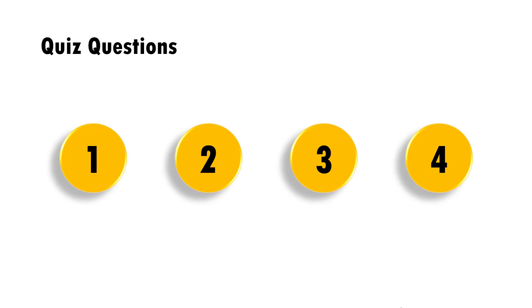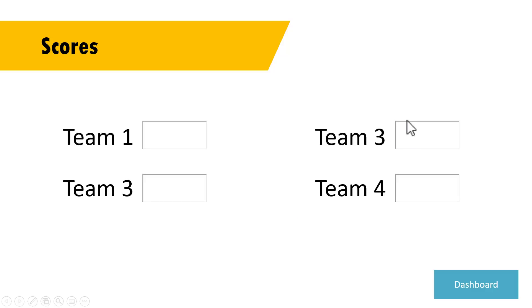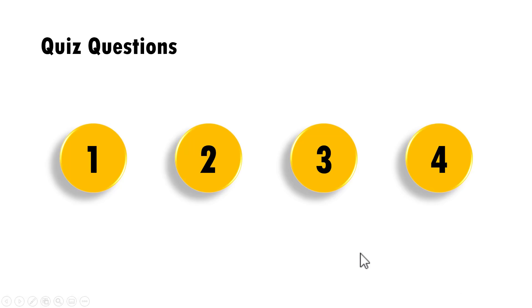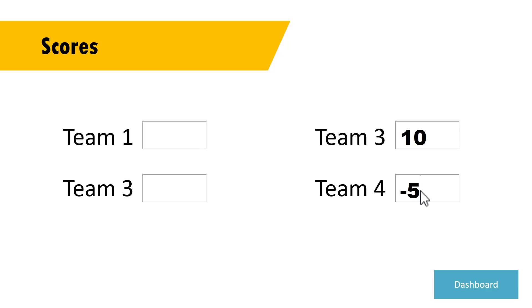The third application is updating scores when you create a quiz session for your students. Let us say you have four teams and four questions. You ask team three question number three, click on it to go to that question, check if the answer is right or wrong, and give plus 10 or minus five accordingly. You then click the scores button to go to the scoreboard and update the score. Then you go back to the dashboard and ask the next team its question. If the answer is wrong, you give that team minus five.